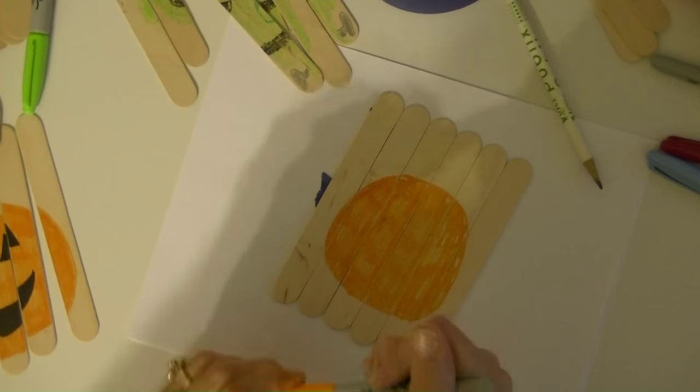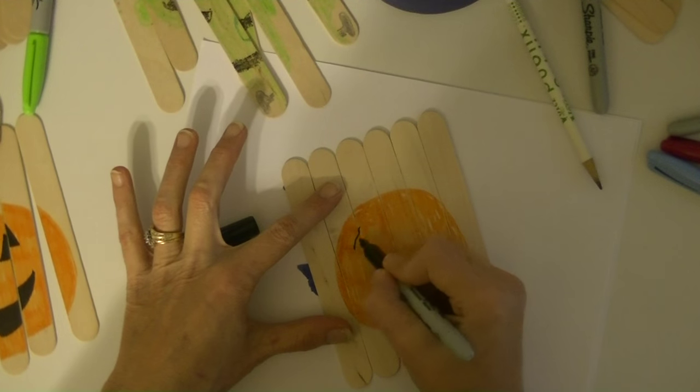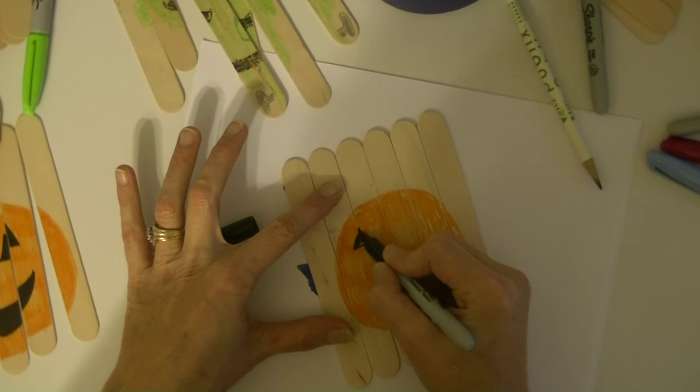All right, so we have the base of a pumpkin. I'm going to grab a black marker and go in and draw in his triangle eye and color that in.